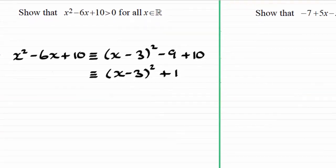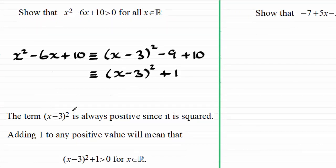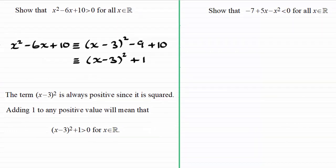So to summarize, I would write that the term (x - 3)² is always positive since it is squared. And adding 1 to any positive value will mean that (x - 3)² + 1 is greater than zero for any real value of x. So that means that we can conclude that therefore x² - 6x + 10 is greater than zero for all real values of x.